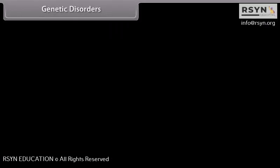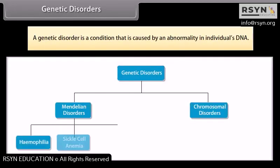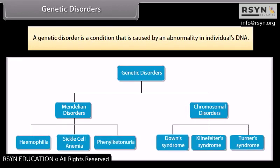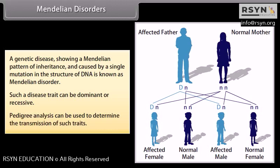Genetic Disorders. A genetic disorder is a condition caused by an abnormality in an individual's DNA. A genetic disease showing a Mendelian pattern of inheritance and caused by a single mutation in the structure of DNA is known as a Mendelian disorder. Such a disease trait can be dominant or recessive, and pedigree analysis can be used to determine the transmission of such traits.